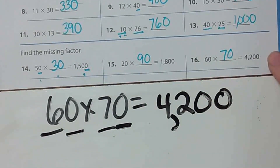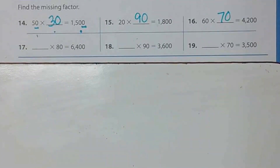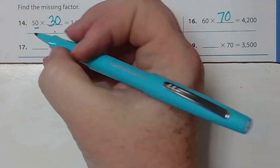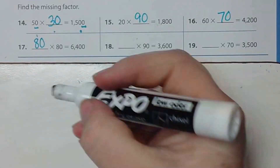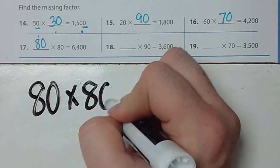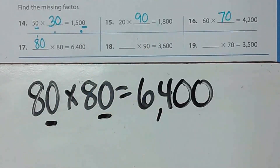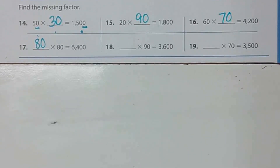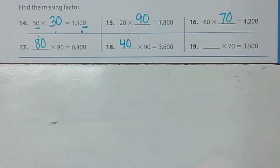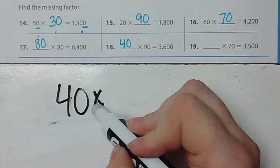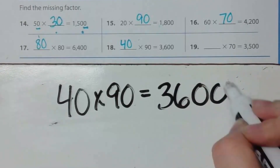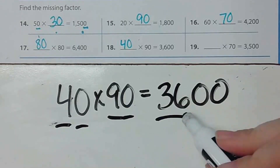Number 17: what times 80 equals 6400? We think it's 80. Eight times 8 is 64, add two zeros — 6400. Correct! Number 18: what number times 90 equals 3600? Let's check 40 — 40 times 90: 4 times 9 is 36, two zeros — 3600. Correct!